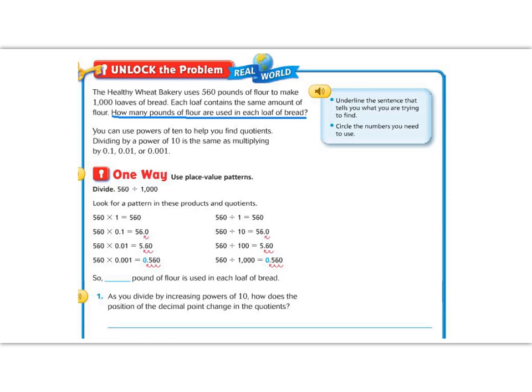The blue box also tells us to circle the numbers that we need to use. Well, we know that they use 560 pounds of flour to make 1,000 loaves of bread. So that means that we're going to be dividing 560 by 1,000.